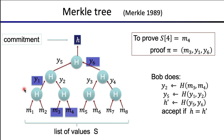Very fast verification of these Merkle proofs. Alice committed to a list — in this case eight values, but in general a very large list. She can later open any element in that list and prove that element is consistent with the public commitment to the entire list. Here, h was the public commitment to the entire list, and Alice can prove that m4 is in fact the fourth element. The proof is really short, containing only three values.